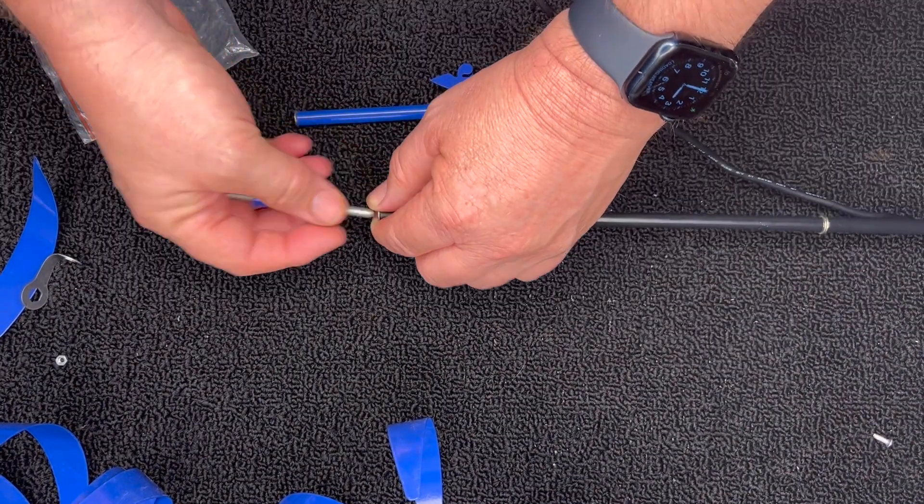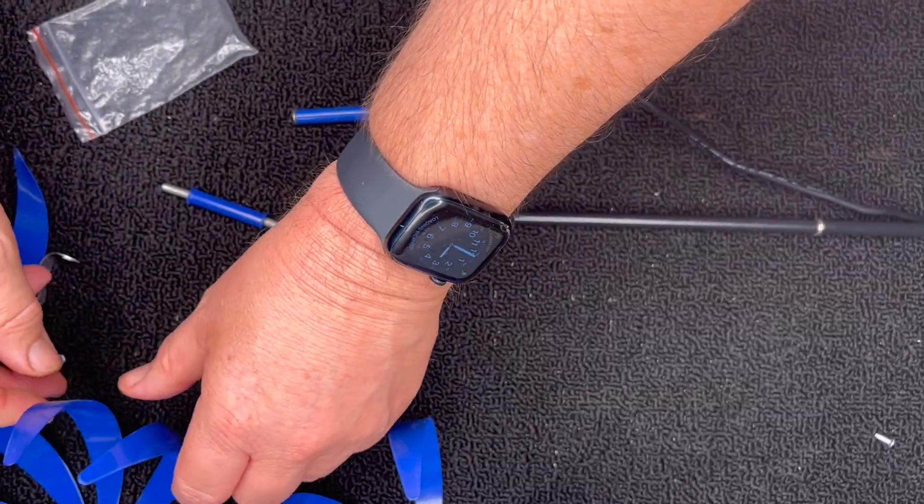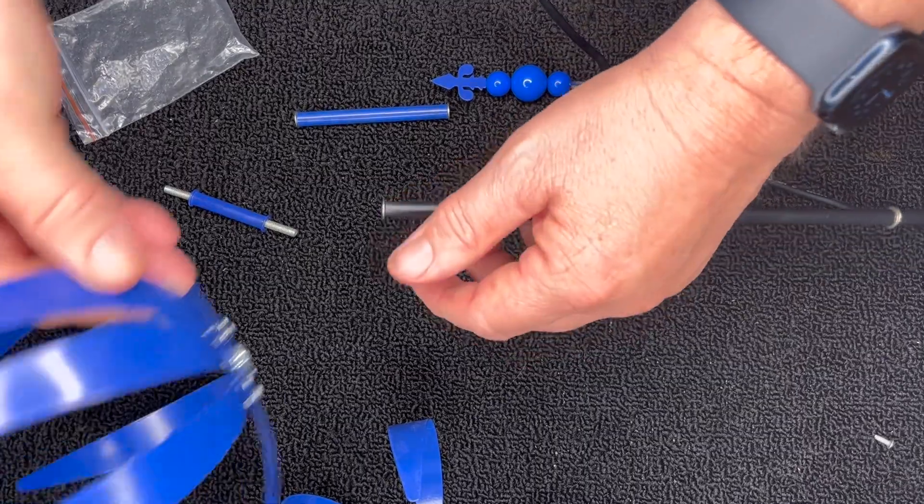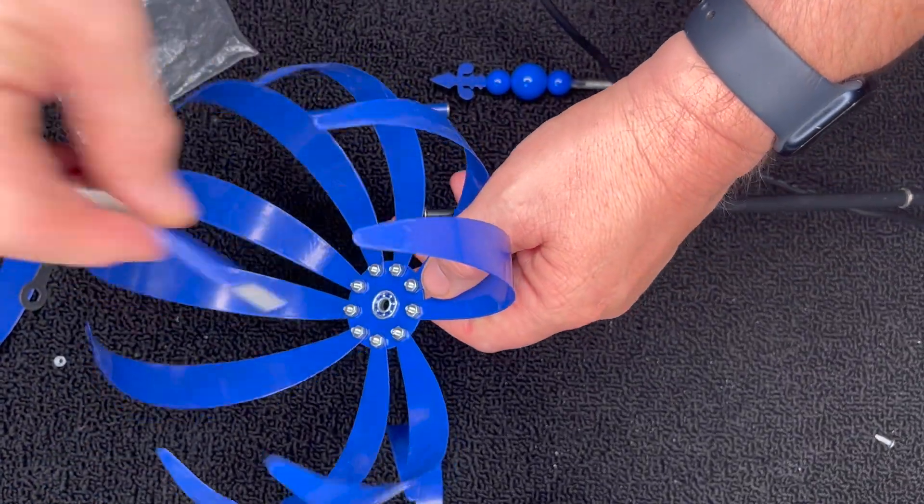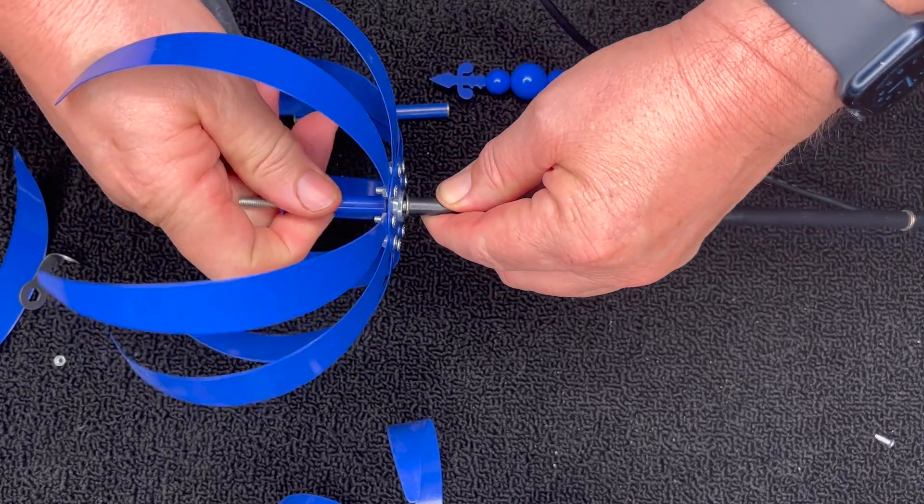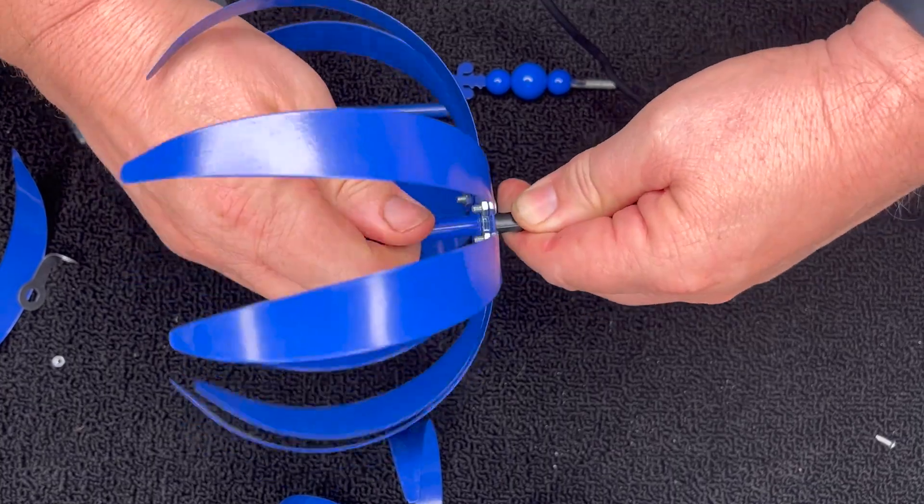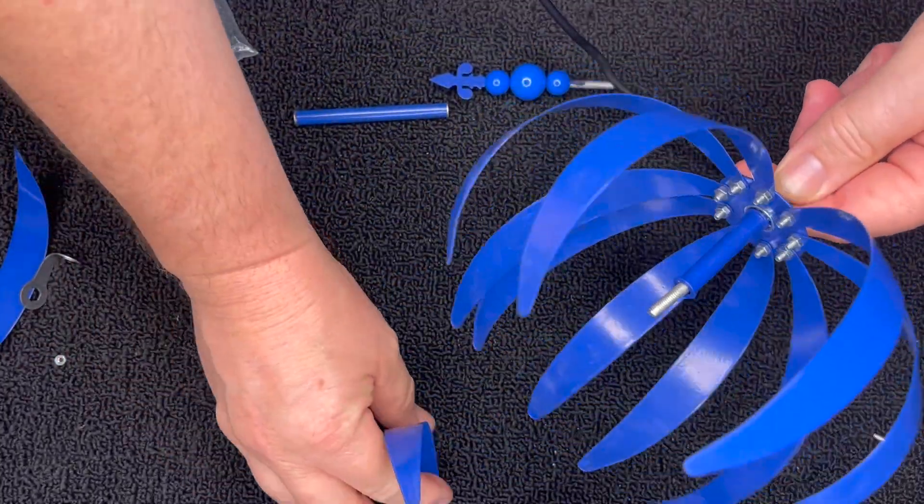Now what we want to do, we put the bigger of the two flowers, the one that has the most petals, goes on the bottom. So now this goes into here, then it threads into there like so. Then you take the next piece.